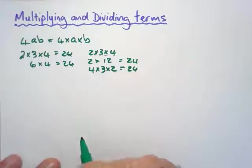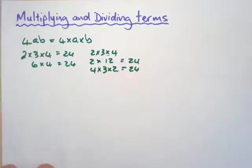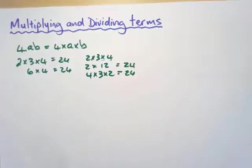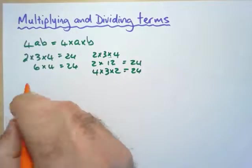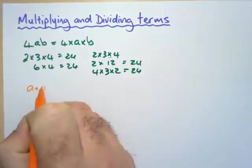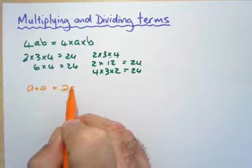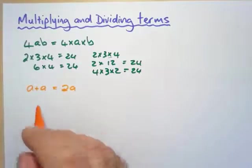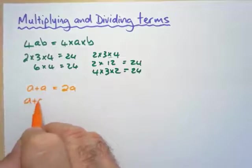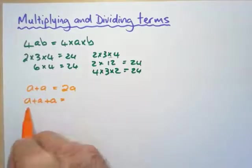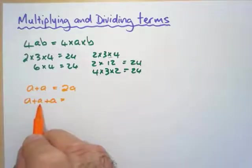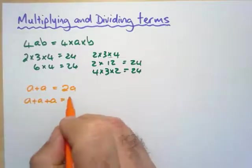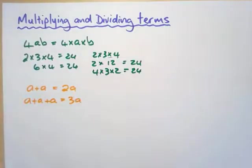The only other thing that you need to remember is the following. If I have a plus a plus a plus a, so if I have a plus a, one a plus another a is 2 of those a's. So apple plus an apple is 2 apples. If I say a plus a plus a, a is one apple plus another a is 2 apples plus another one is 3 apples. It's 3a.